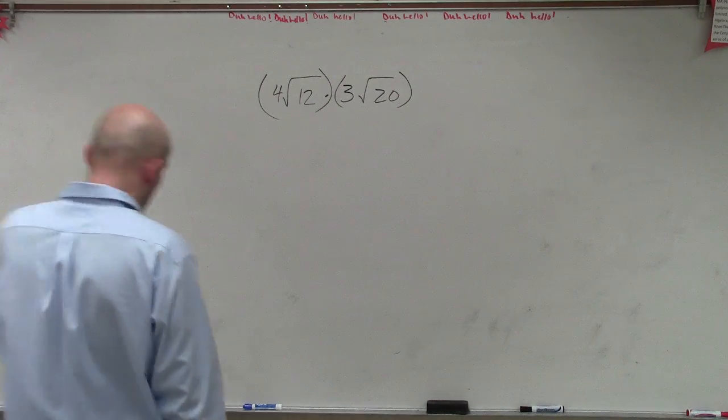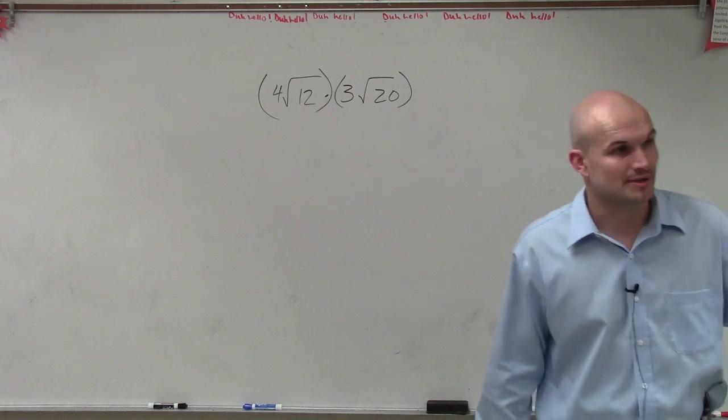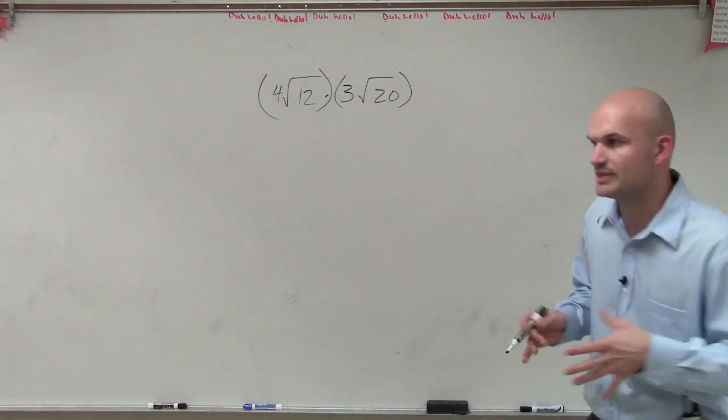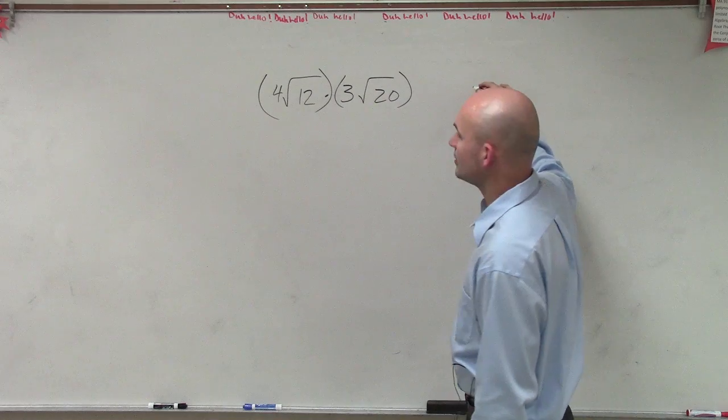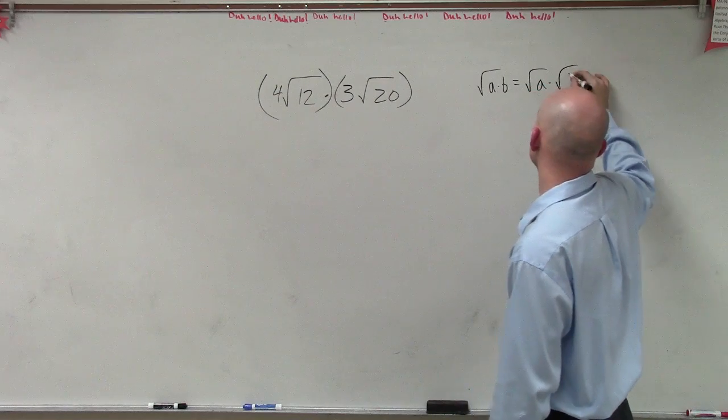To do a problem like this, what you have here is the product of two binomials. Now, ladies and gentlemen, there's a couple things I wanted you to remember. Remember, we said the square root of a times b equals the square root of a times the square root of b.